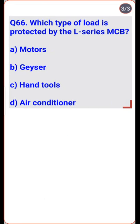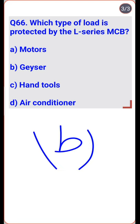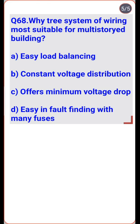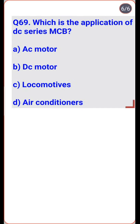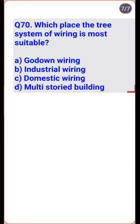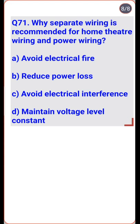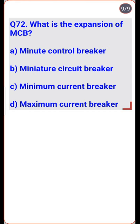The type of load protected by the L-series MCB is a geyser — option B. The purpose of flexible cord in domestic wiring is for connection — option D. The tree system of wiring is most suitable for multi-story buildings — option D. The application of DC series MCB is locomotive — option C. Separate wiring is recommended for home theater and power wiring to avoid electrical interference — option C.